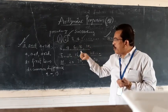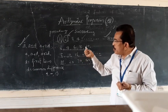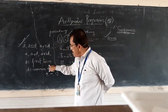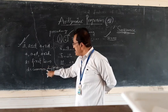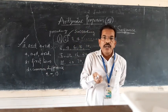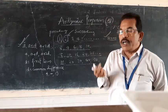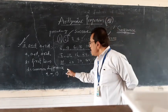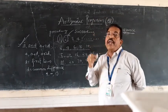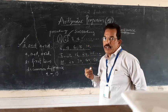To summarize: 'a' is the first term and 'd' is the common difference. The common difference may be positive, negative, or zero. Now try to write some more examples of arithmetic progressions on your own.